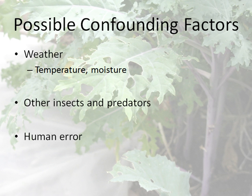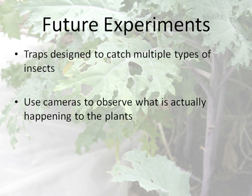Thirdly, human error is also usually a possible confounding factor in experiments. Because we can make mistakes, we can fail to observe things carefully enough, or accidentally do something we weren't supposed to. So human error is generally always a factor.